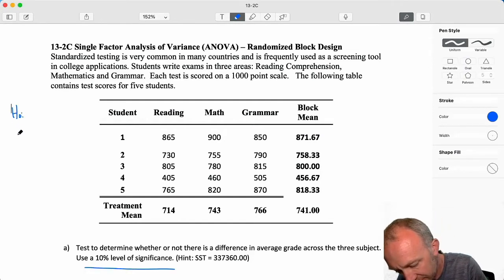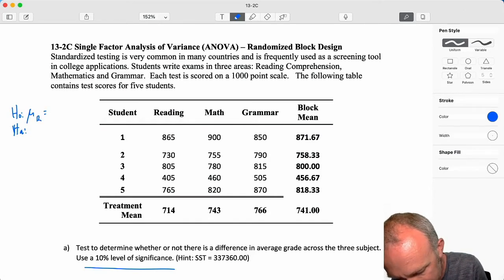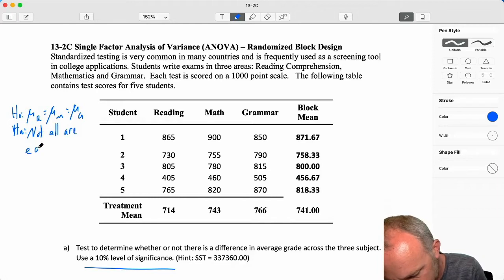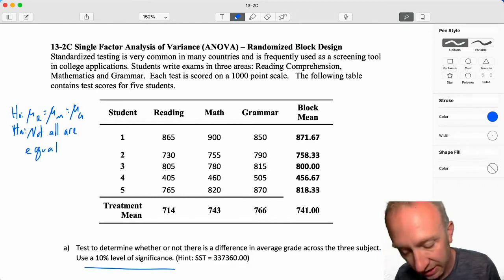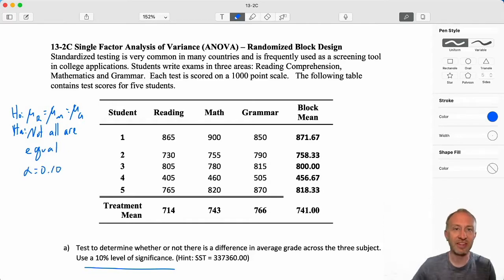Unlike my previous videos where I forgot to write the null and alternative until the very end, let's get that out of the way. Okay, right now, reading is equal to math is equal to grammar. Not all are equal. We're doing this test at the 10% level of significance.